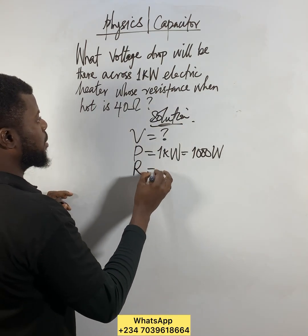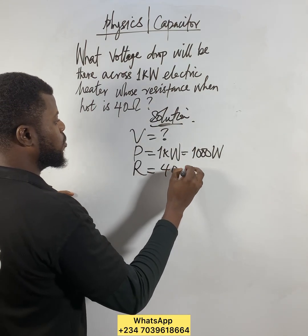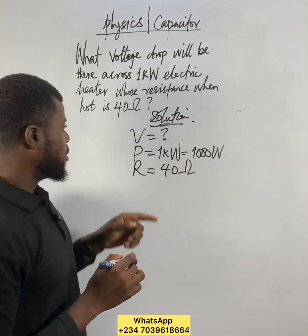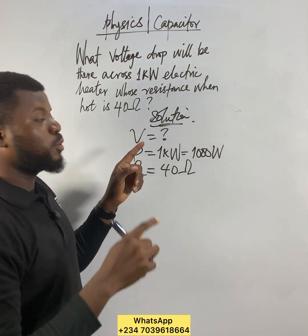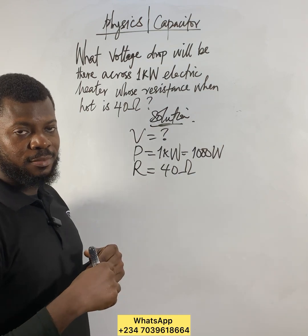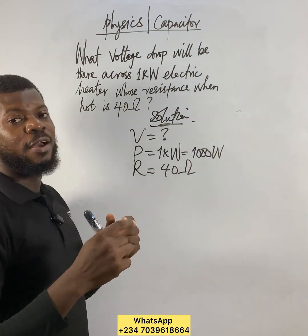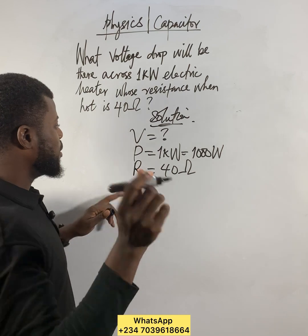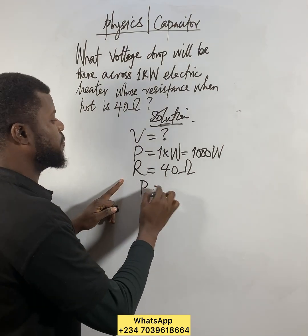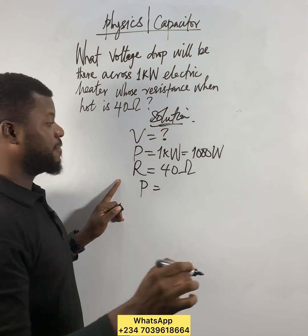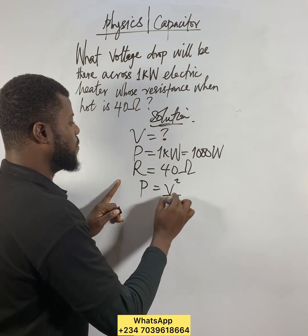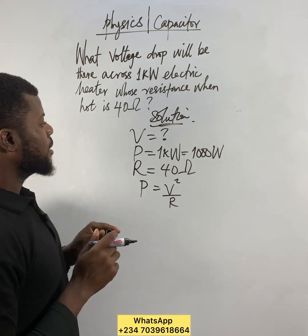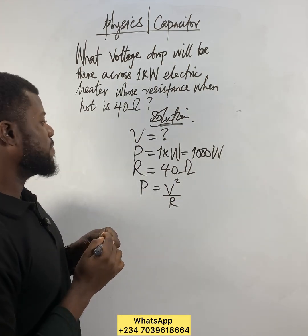Now the resistance when hot is 40 ohms. We know from Ohm's law that V equals IR. But I want to share another formula that will make it easier. Remember that power P equals V squared over R. I'll use that formula here.